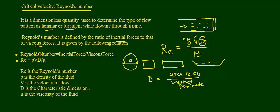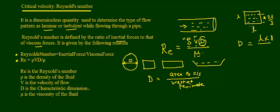For example, consider a square pipe with side length l, where water fills the pipe to a height of 2l/3. The characteristic dimension D would be: cross-section area = l × l = l², and the wetted perimeter = l + 2l/3 + 2l/3. From this we can calculate the characteristic dimension D for this particular pipe. That is what D represents, and Reynolds number is the product of these terms.